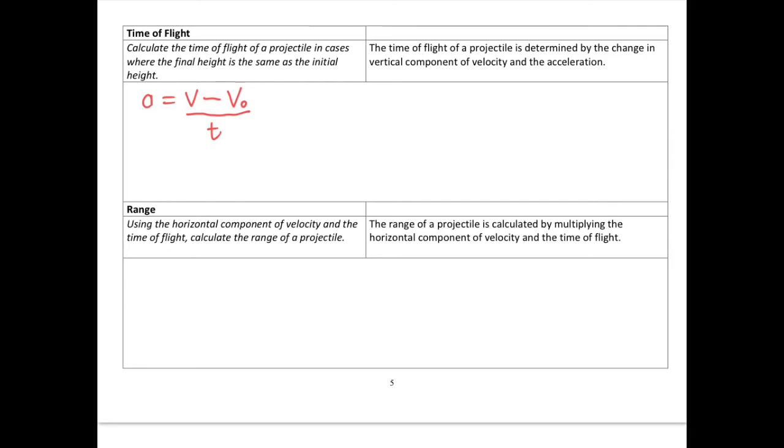We can rearrange that formula fairly easily to work out time if we know the final and initial velocity and the acceleration. We do that by multiplying both sides by t to get rid of the t on the bottom, and then divide both sides by a. That leaves us with time equals v minus v_0 divided by a. You also could have got that from rearranging the formula v equals v_0 plus a times t. We can go backwards and forwards fairly easily rearranging all three of those.